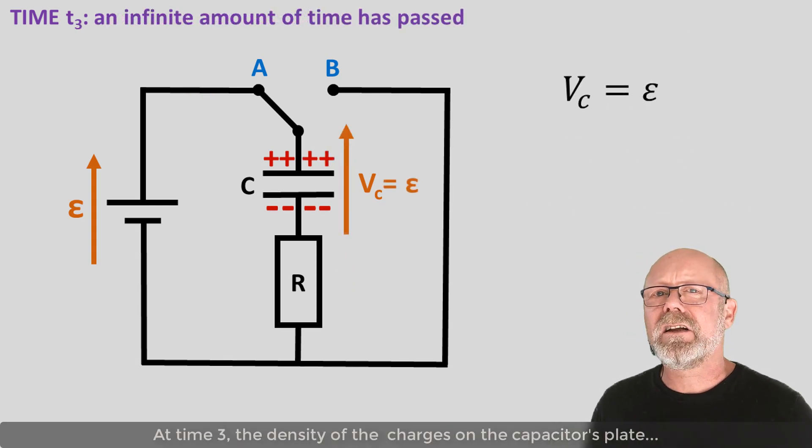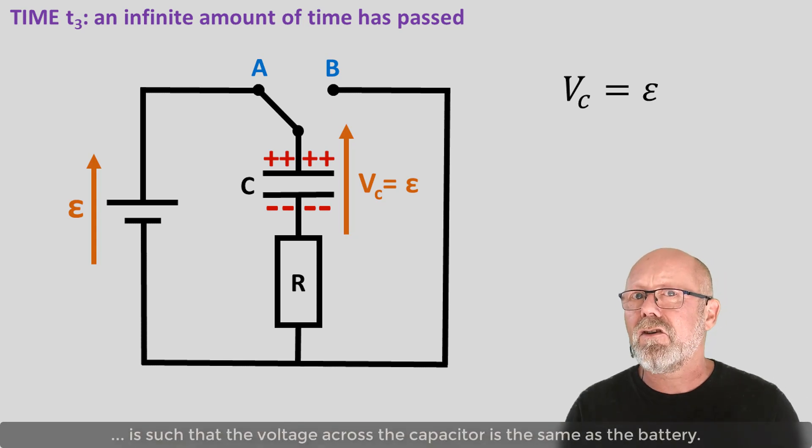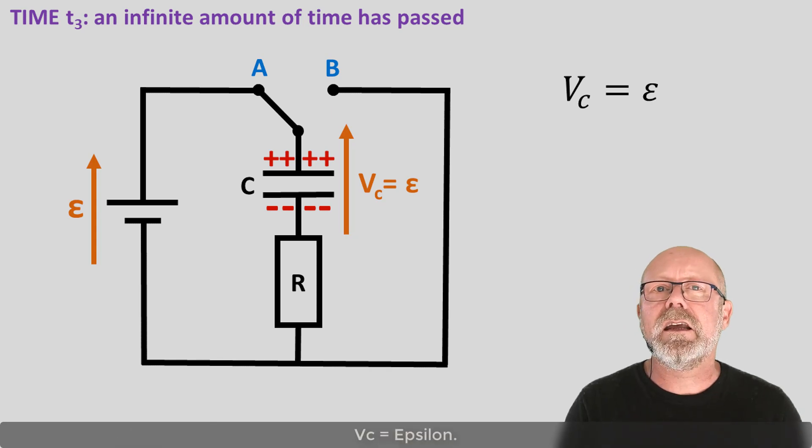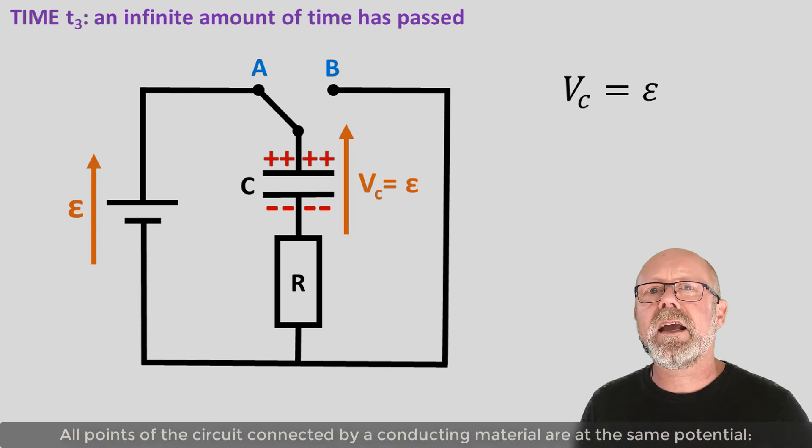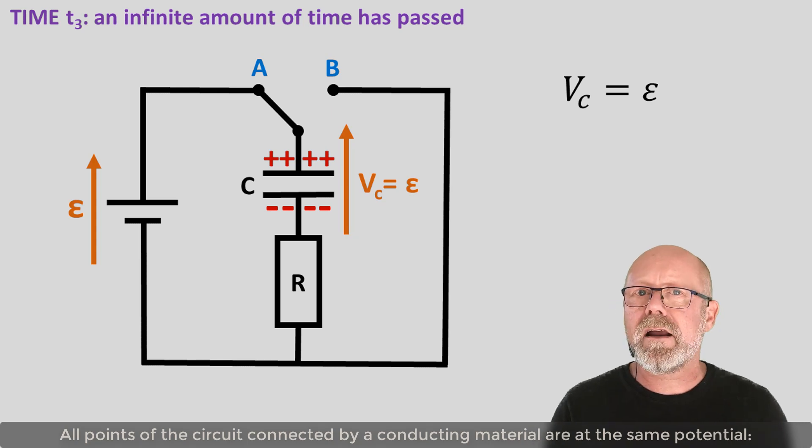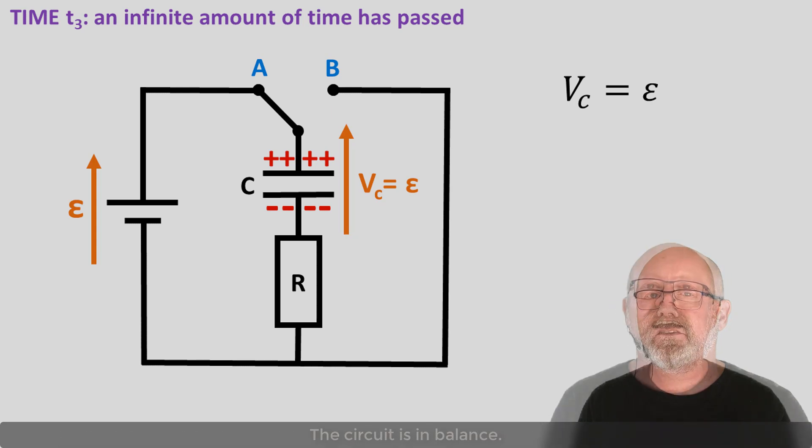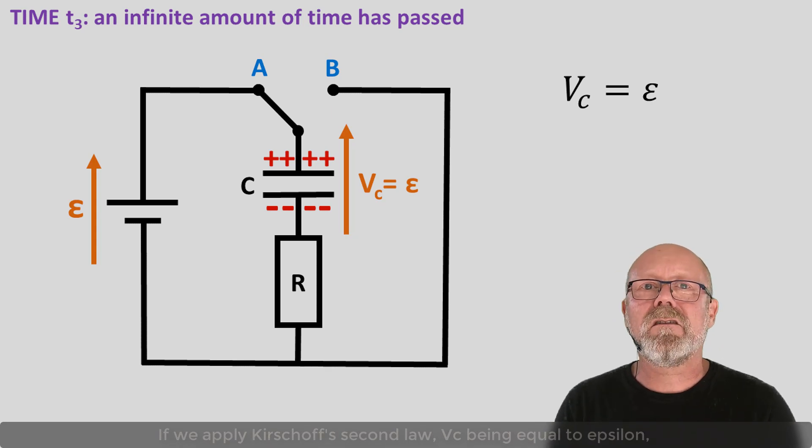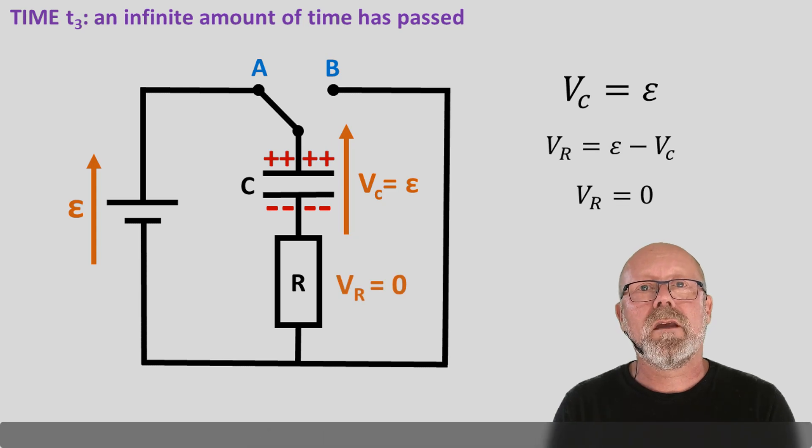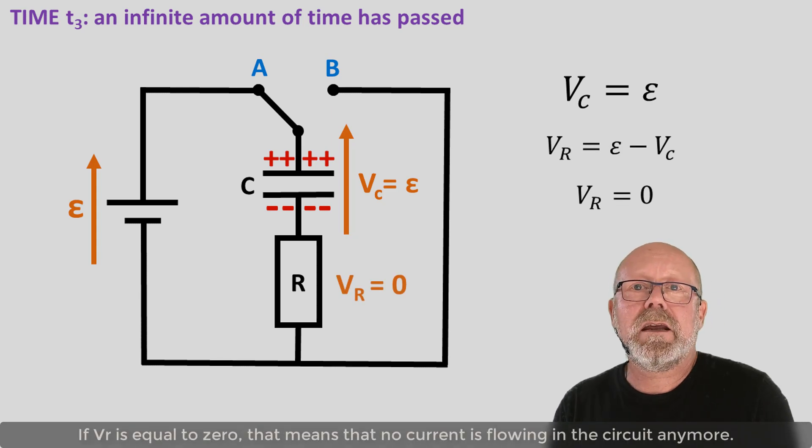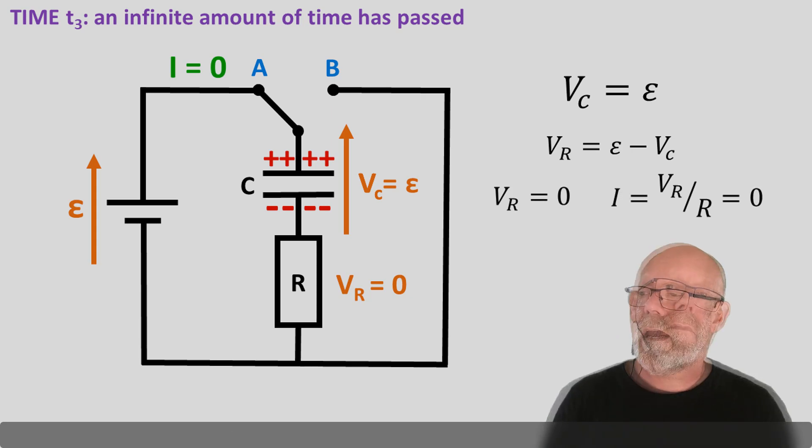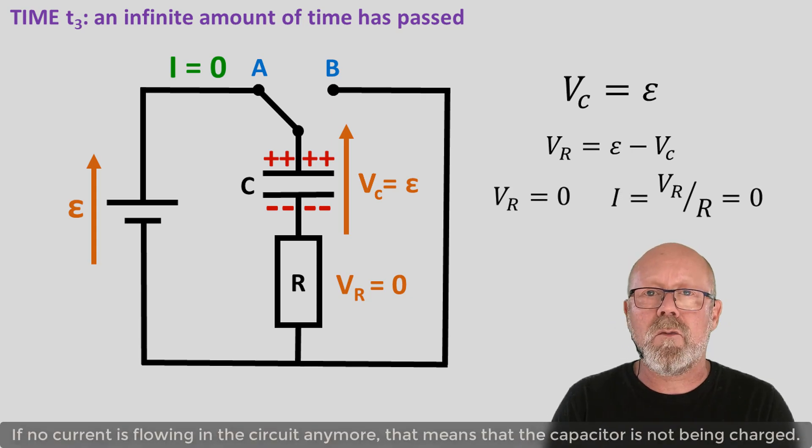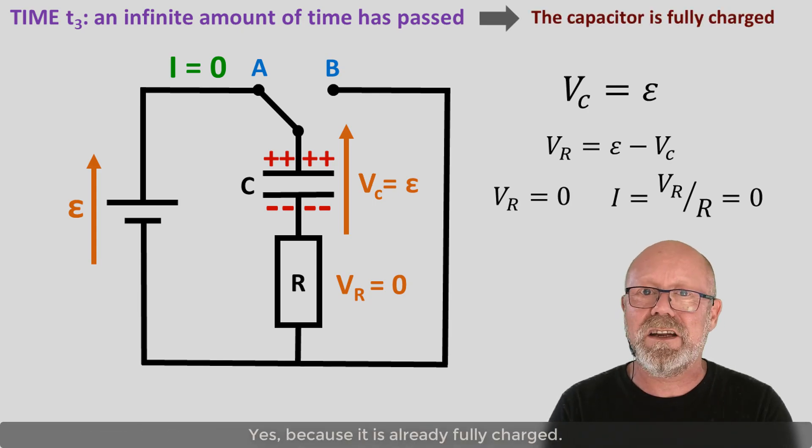Let's continue moving in time. At time 3, the density of the charges on the capacitor's plate is such that the voltage across the capacitor is the same as that of the battery. Vc equals epsilon. All points of the circuit connected by a conducting material are at the same potential. The circuit is in balance. If we apply Kirchhoff's second law, Vc being equal to epsilon, that means that Vr must be equal to zero. If Vr is zero, that means that no current is flowing in the circuit anymore. If there is no current flowing in the circuit anymore, that means that the capacitor is not being charged. Yes, because it is already fully charged.